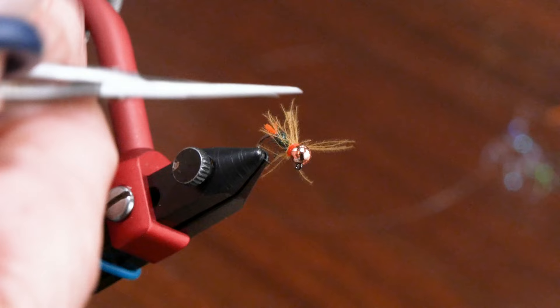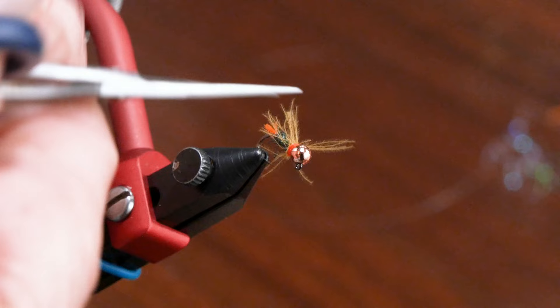All right. Well, that right there is the Blowtorch Nymph. It is a Devin Olsen pattern. It is available right here at the shop. You can tie them up or buy them up.